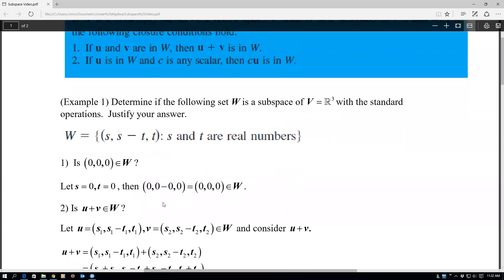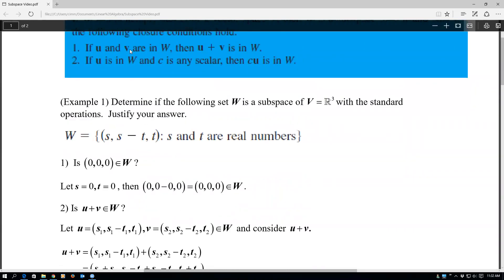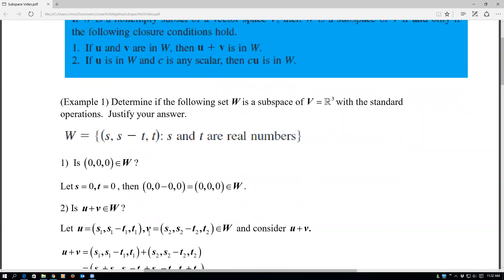So the next thing we look at is, of course, if U and V are in there, is U plus V in there. So we let U and V look like the set. So essentially what I'm going to do is I'm going to take U to equal (S₁, S₁ - T₁, T₁) and V to be (S₂, S₂ - T₂, T₂), where those are just arbitrary real numbers, and consider their sum.